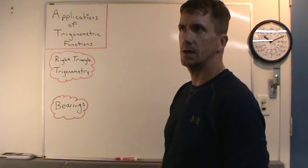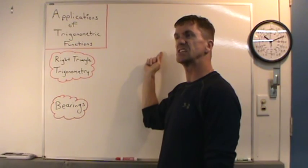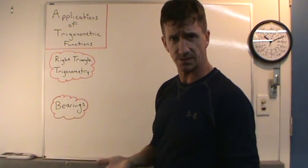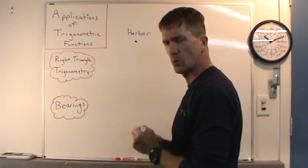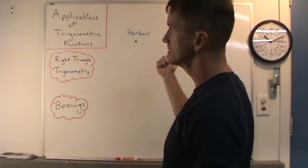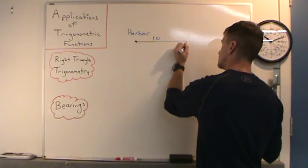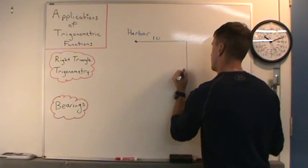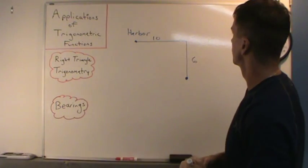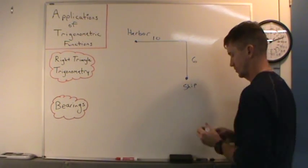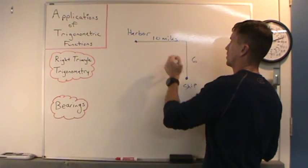This time, let's say you are located 10 miles to the east and six miles south of a harbor. So we'll go 10 miles this way and six miles south. This is our ship. We're told our ship is located 10 miles east of the harbor and six miles south.